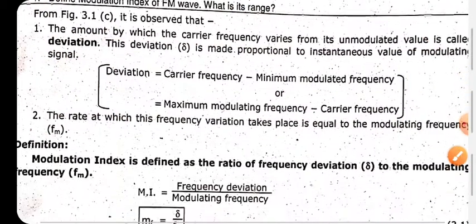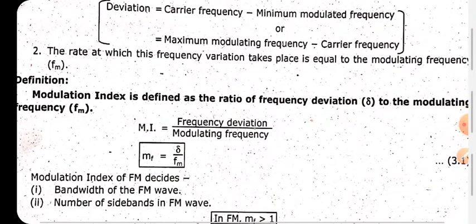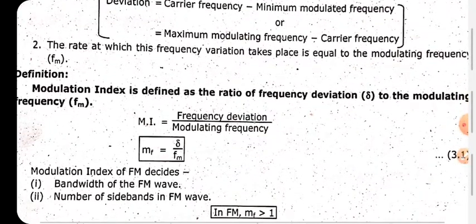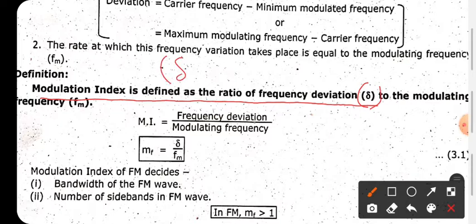The definition of modulation index: modulation index is defined as the ratio of frequency deviation delta (δ) to the modulating frequency FM. So modulation index equals frequency deviation upon modulating frequency.